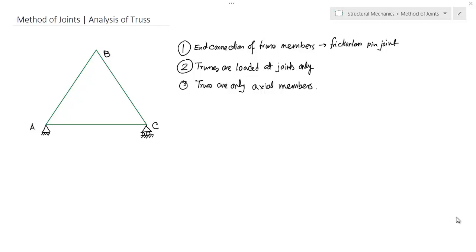There are some basic assumptions in the analysis of truss. One is the end connection of the truss members are friction-based in joints, and trusses are loaded at joints only. If the trusses are not loaded at the joints, there will be bending moment in the truss member. Third assumption is trusses are only axial members, that's why they are allowed to be loaded at the joints only.